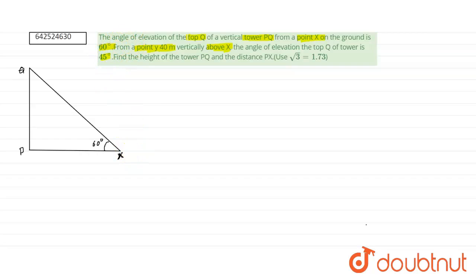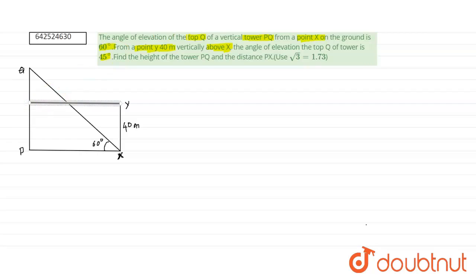From point X there is a point Y that is 40 meters vertically above X. This point is Y and it is vertically 40 meters above X. We draw a perpendicular and the angle of elevation from point Y to the top Q is 45 degrees. We have to find the height of the tower PQ and the distance PX. Use root 3 equals 1.73.